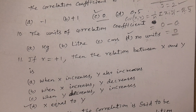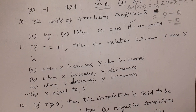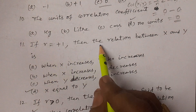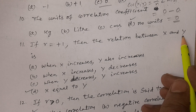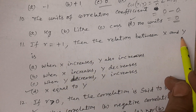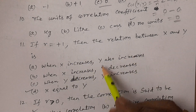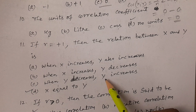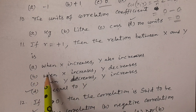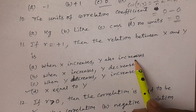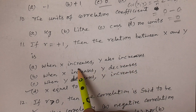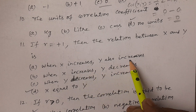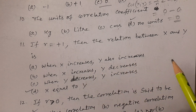Question number eleven: if R equals plus one, then what is the correlation between X and Y? Options include: when X increases Y decreases, when Y decreases X increases, when X increases Y also increases — which is positive correlation — and X equal to Y. The answer is not simply positive correlation here.